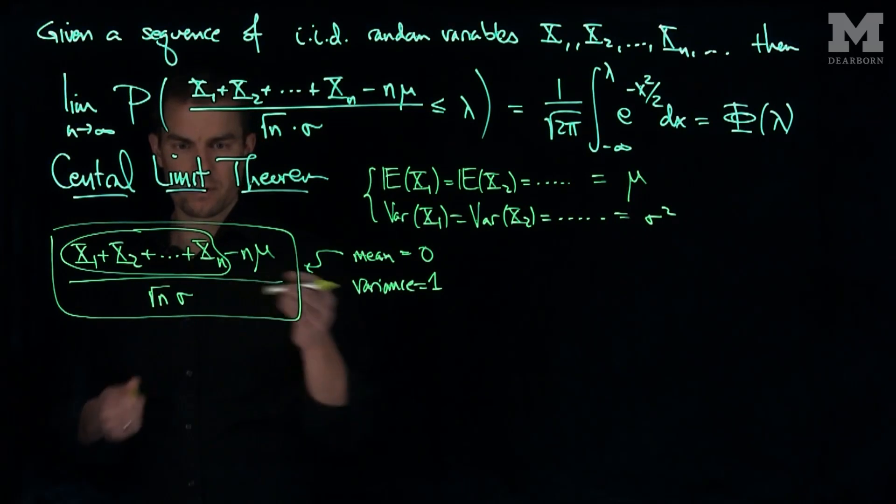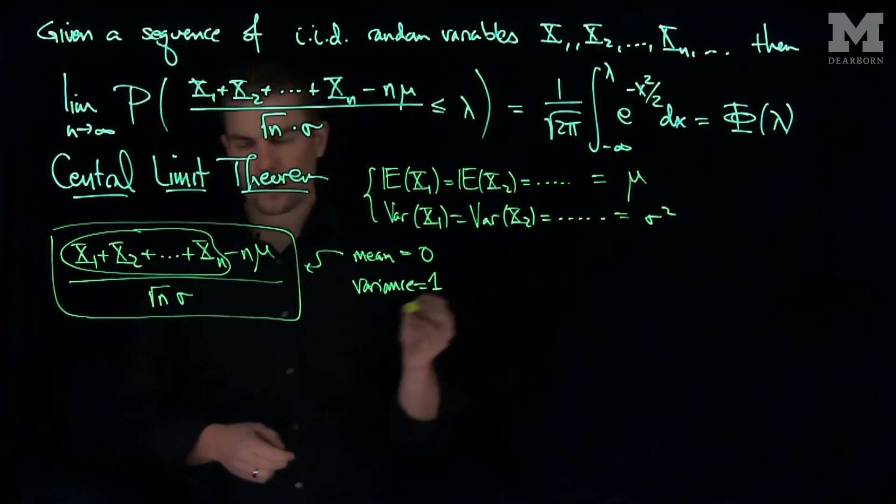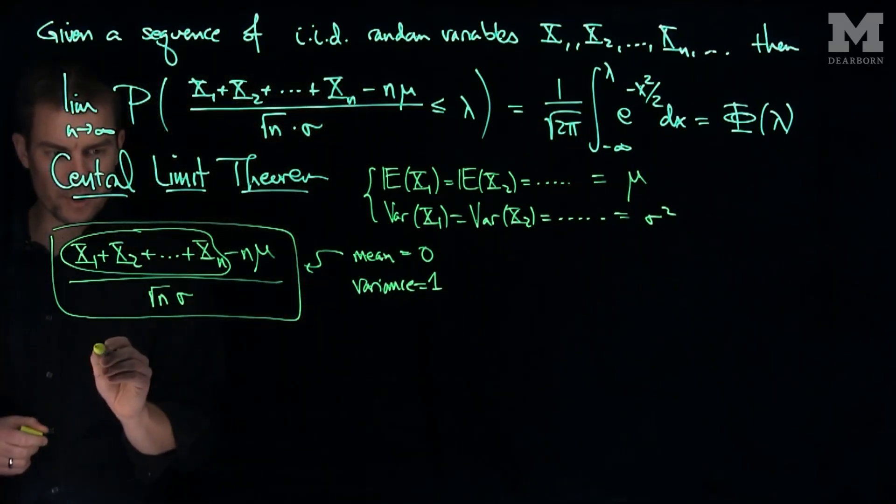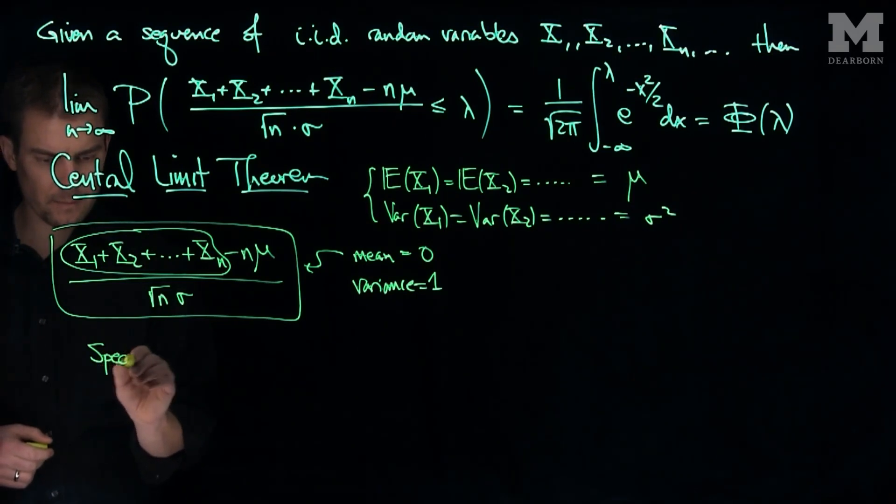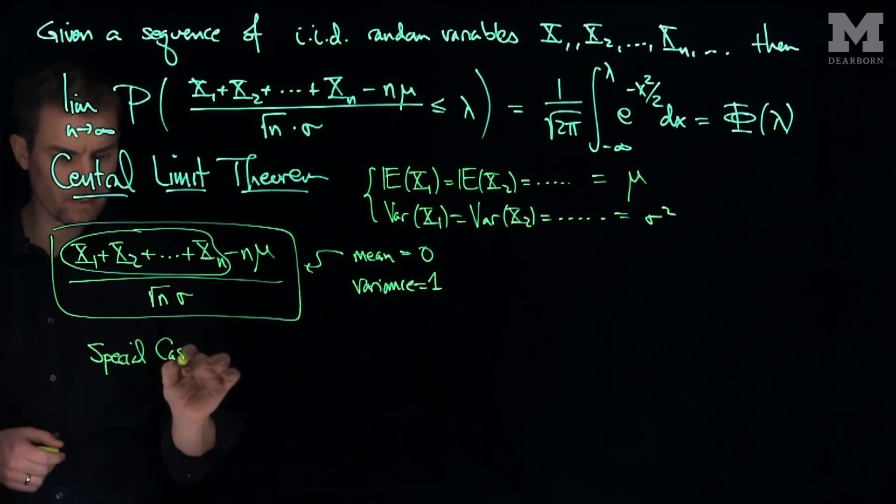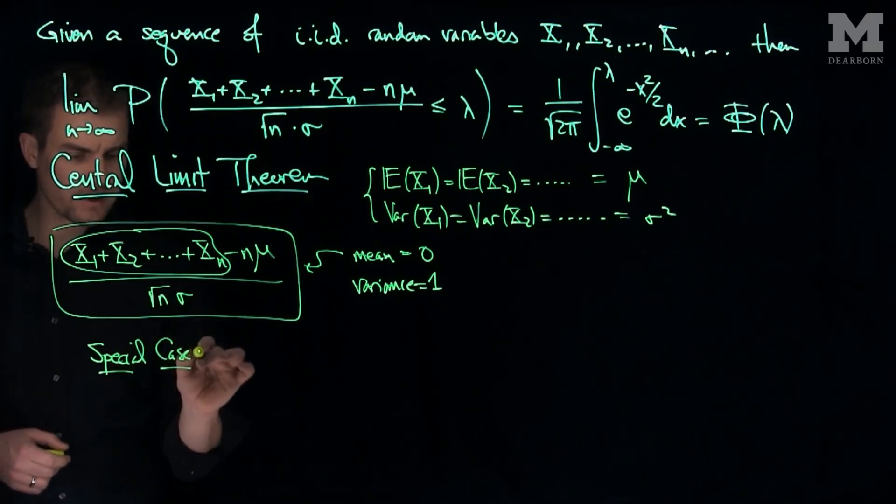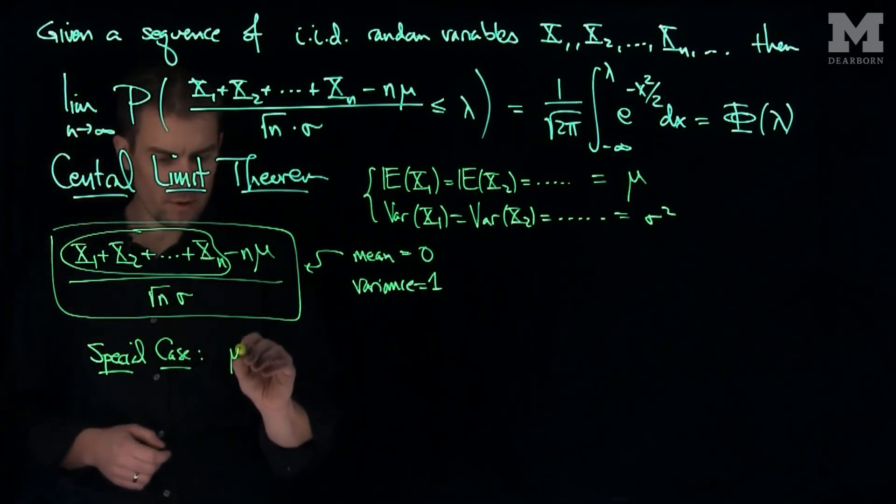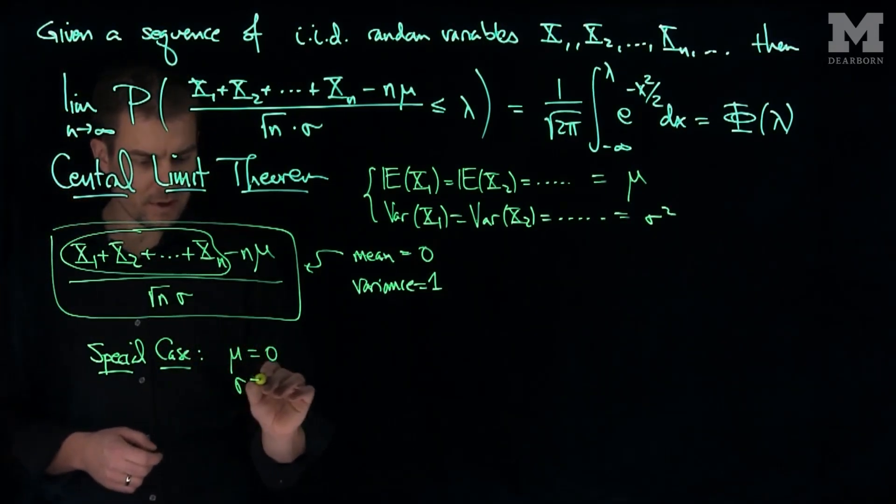Is we get some sense of how this would be proven. What we can do is a special case of this. Think about a special case; it will help us understand the proof. A special case of this is that if mu is equal to zero and sigma is equal to one.